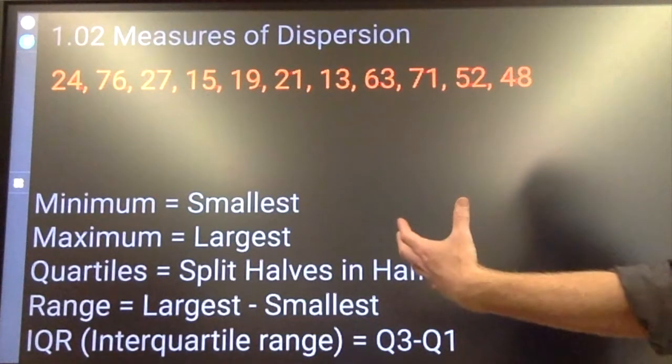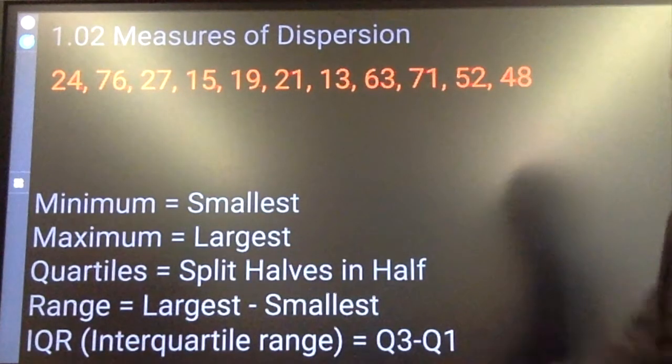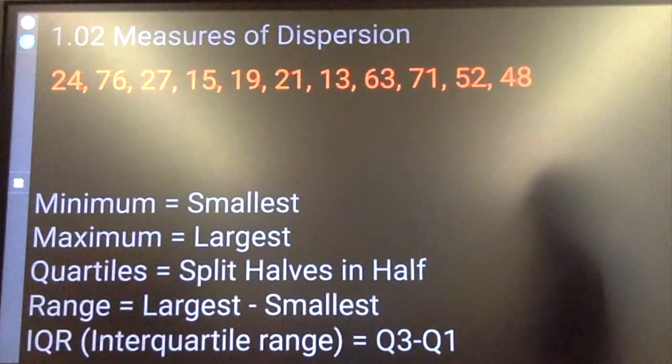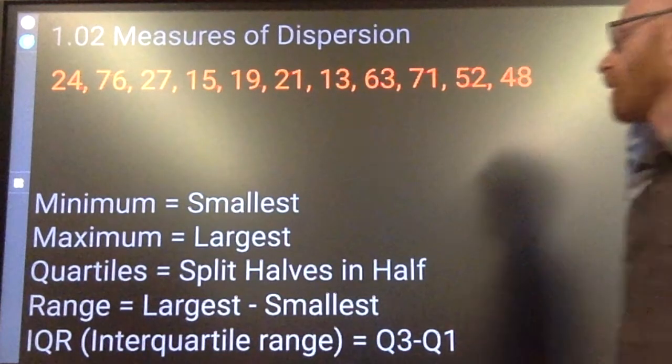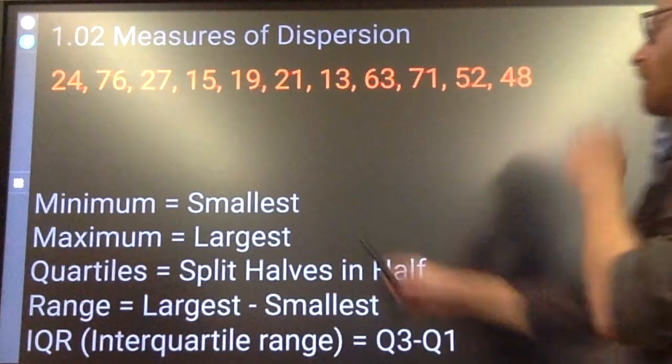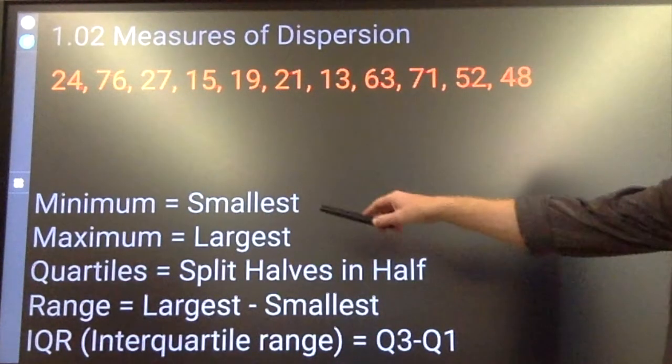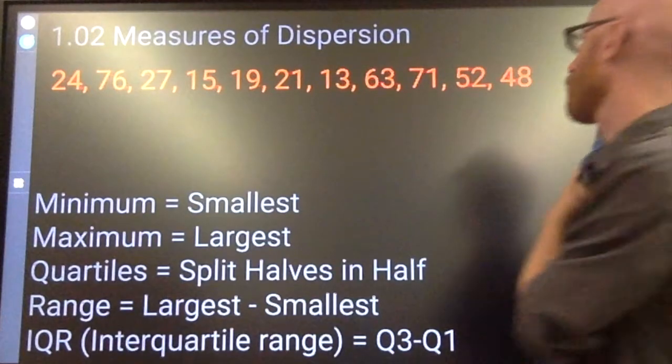Range is your largest number minus your smallest number. Interquartile range is going to be your third quartile minus your first quartile. Again, I'll show you how that works. Before I get into this, I'm going to put these numbers in order. You don't usually need to put them in order just to find minimums and maximums, but you are going to need to put them in order to find the quartiles.